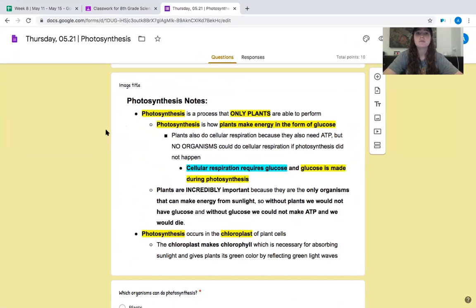Photosynthesis notes. Photosynthesis is a process that only plants are able to perform. Photosynthesis is how plants make energy in the form of glucose. Plants also do cellular respiration because they also need ATP, but no organisms could do cellular respiration if photosynthesis did not happen.